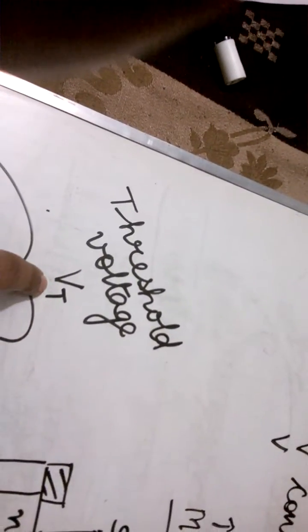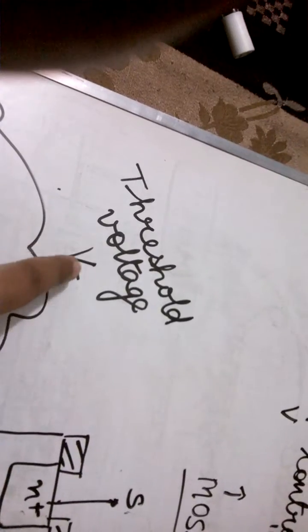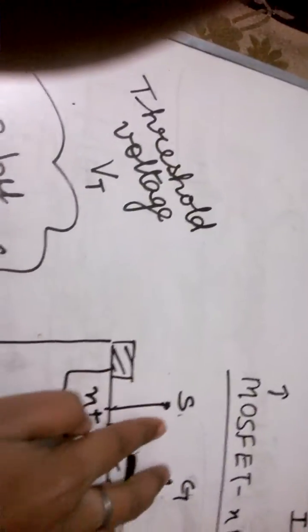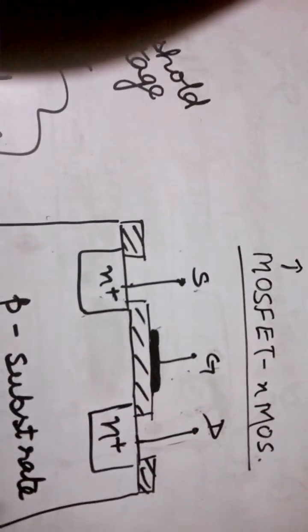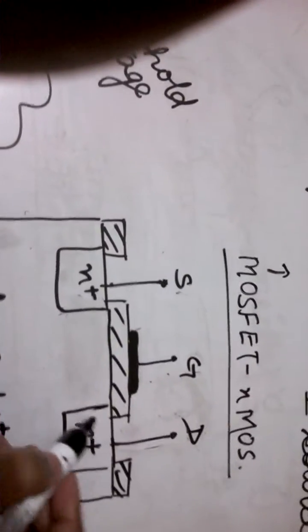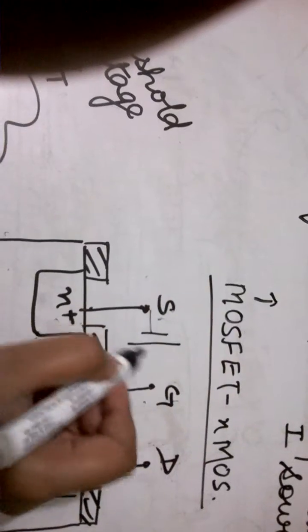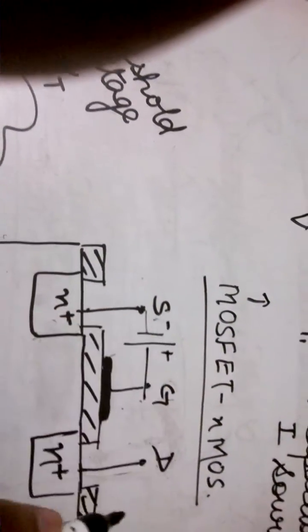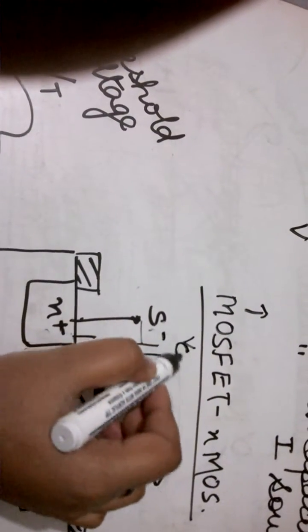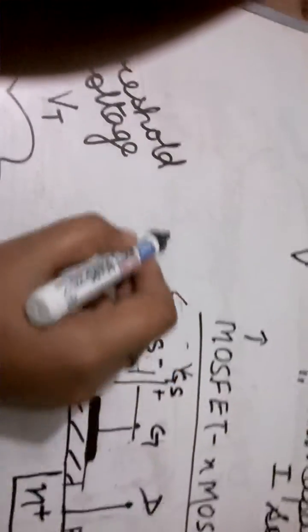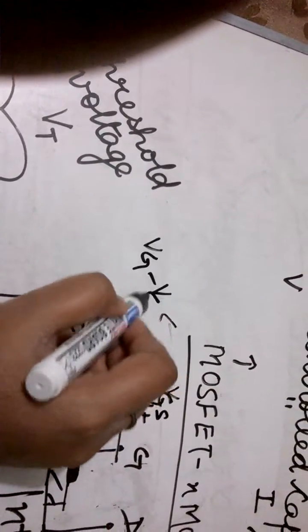So what is VT here? VT is that minimum positive voltage which must be applied between the gate and the source so that there is some ID flowing in the circuit. So this is positive, this is negative, this is your VGS. VGS is basically your VG minus VS.